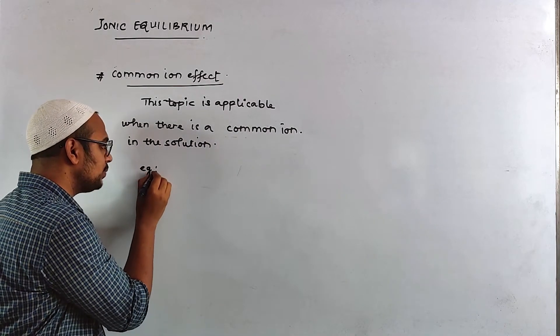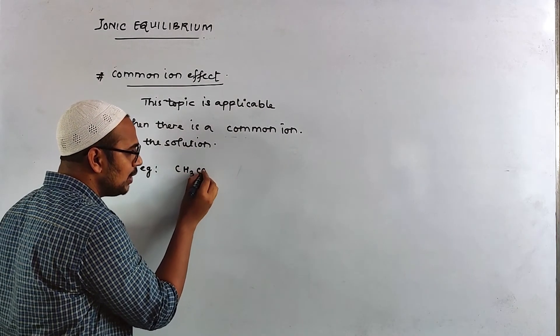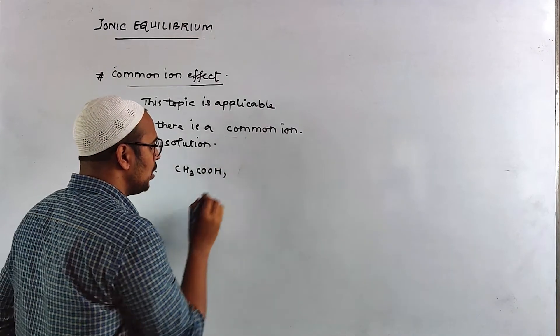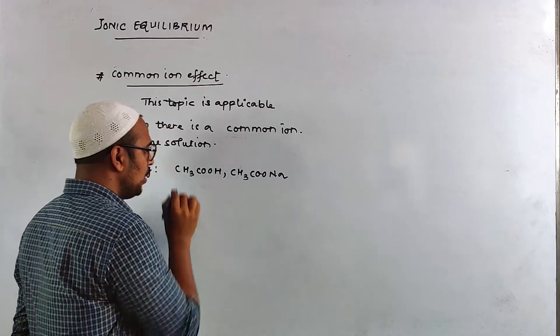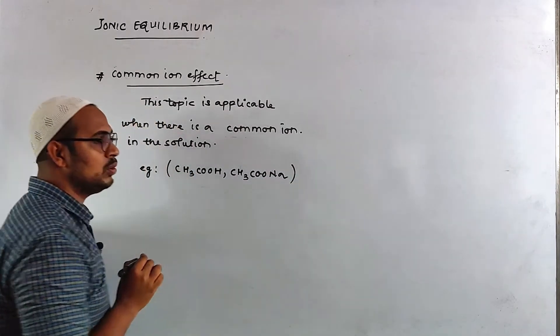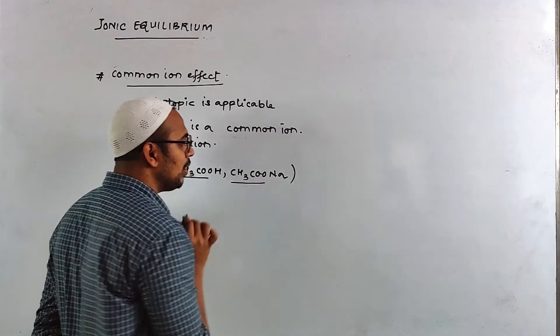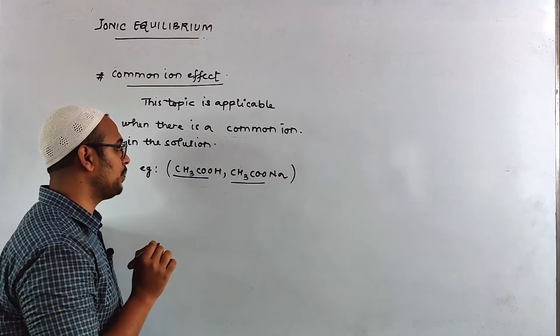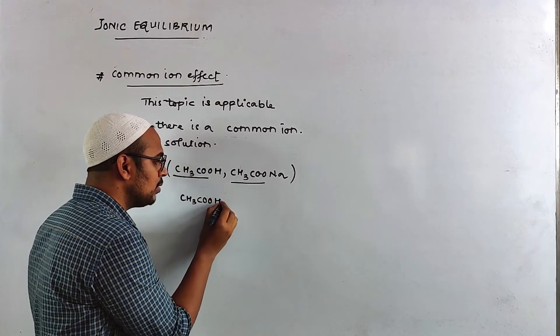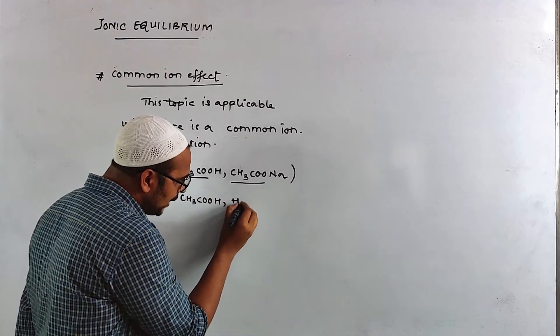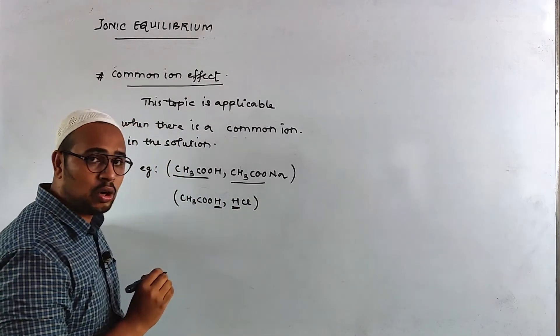Example, consider example. You have CH3COOH acetic acid and you have CH3COONa. If you could have acetate ion and acetate ion, if we mix acetic acid CH3COOH with another HCl, so in this case you can see that one H plus will be common.